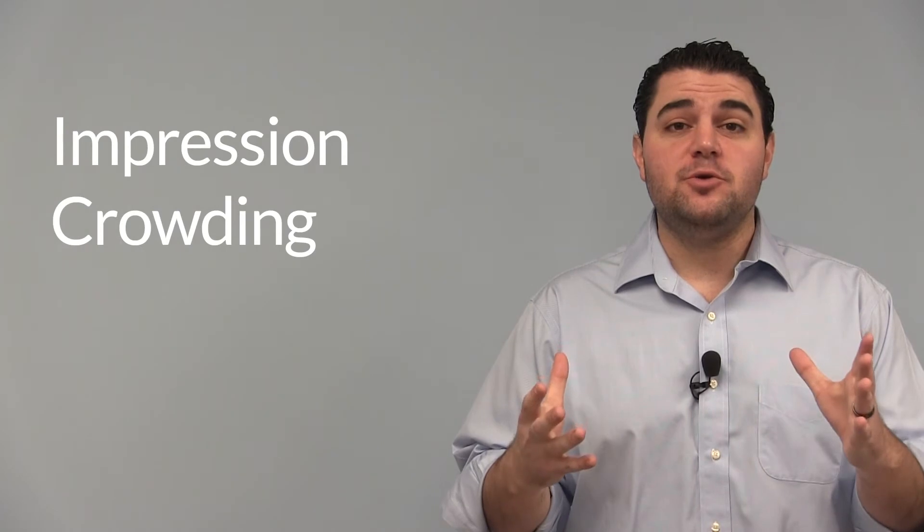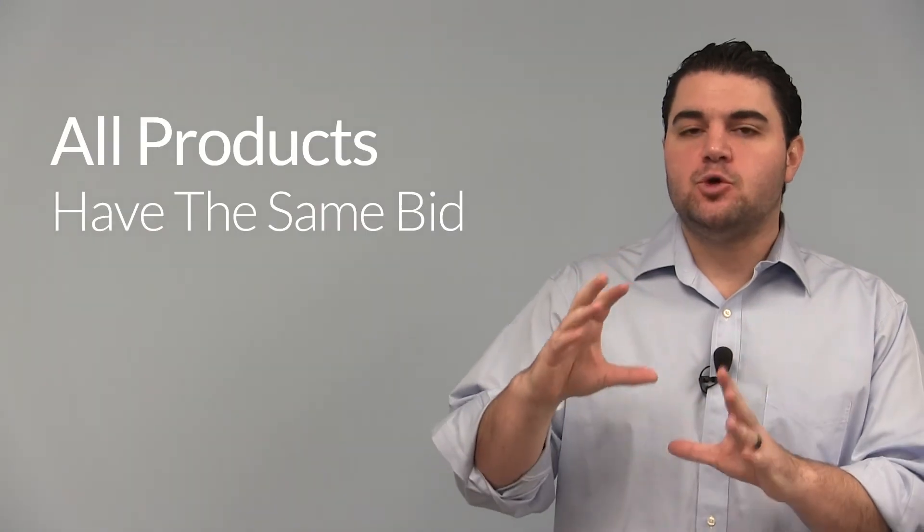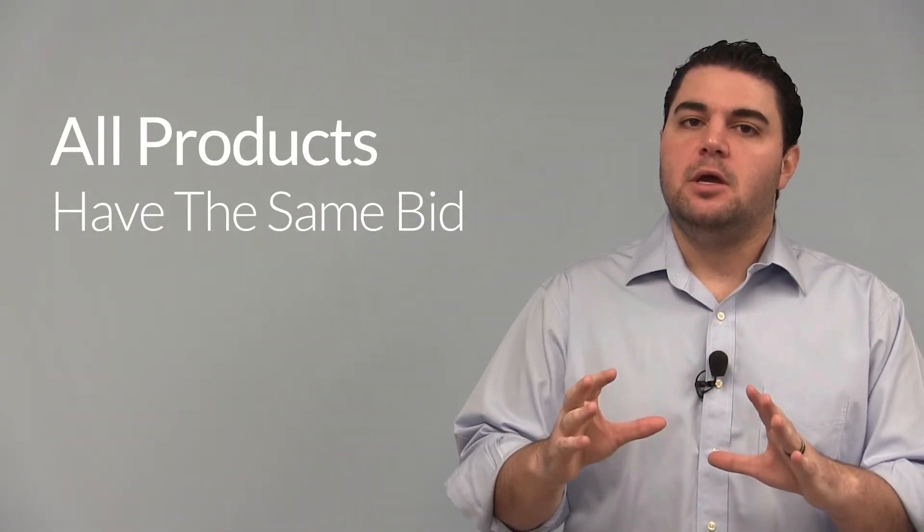Now impression crowding is essentially what happens when you have this grouped campaign structure and what's going on in this structure is essentially every single one of your products are set at the same bid.